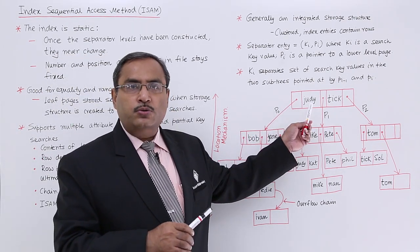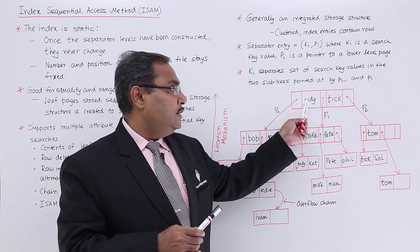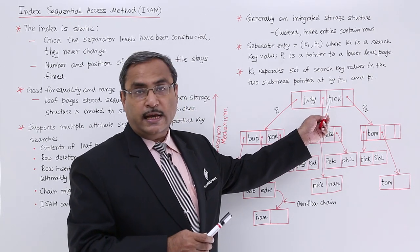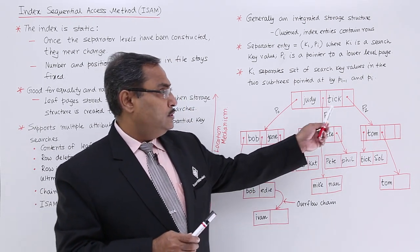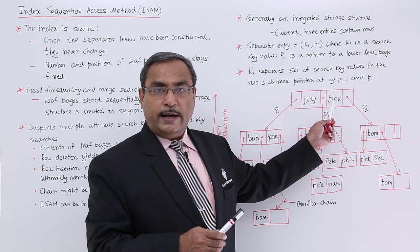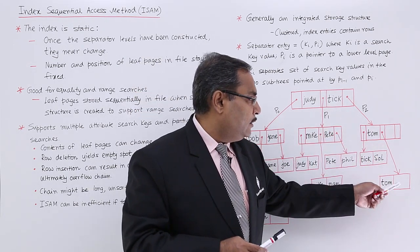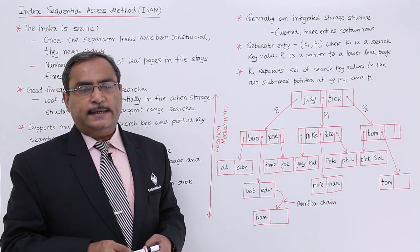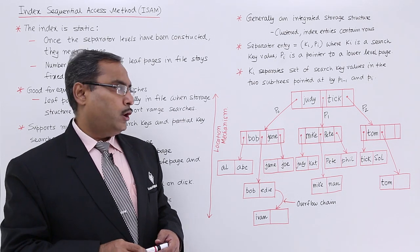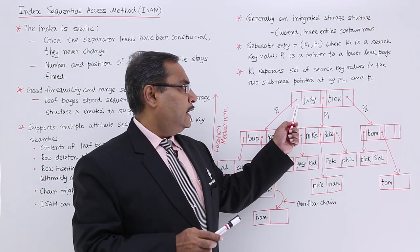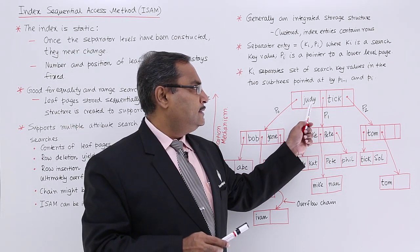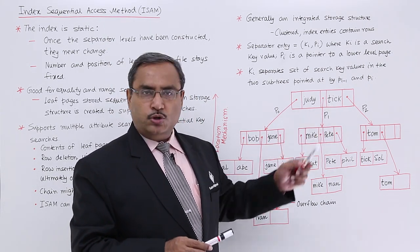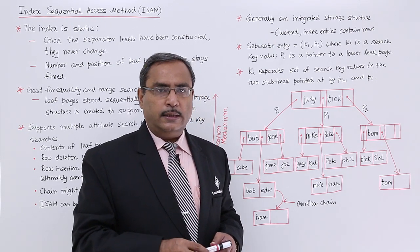All the names which are equal to or greater than JUDY will be coming here and those names will be here who are also lesser than TICK. Those names greater than TICK will be coming to this particular sub-tree. In this way the index sequential access method will be built. These are the pointers and these are the respective key values. You can easily find that the number of pointers will be one greater than the number of key values.